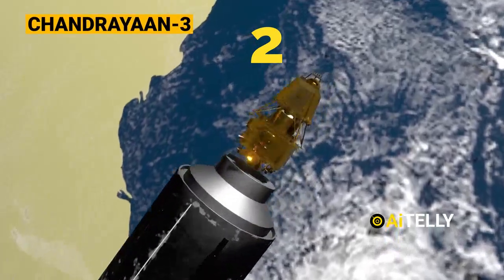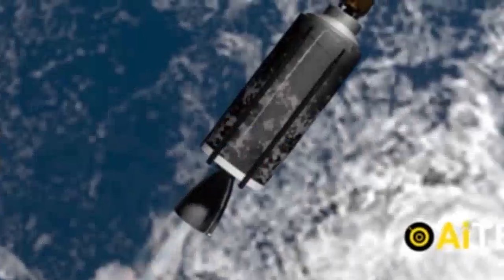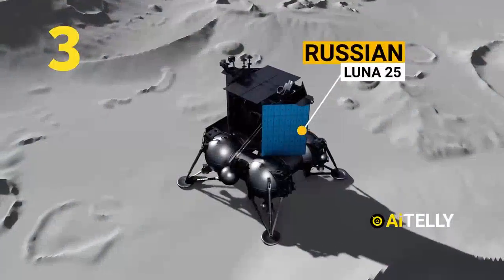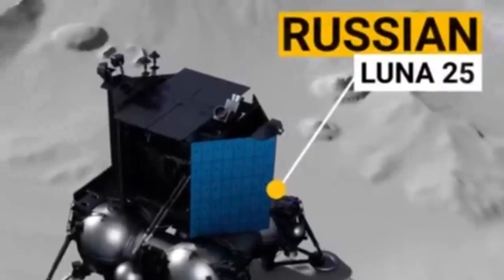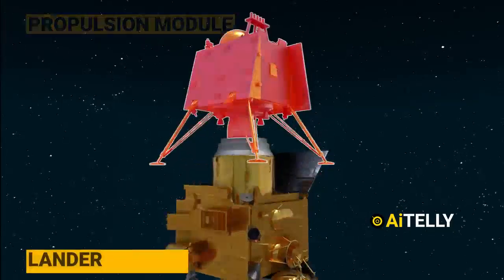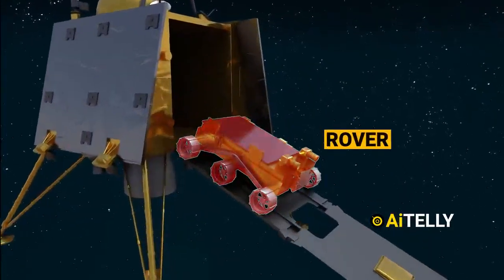Number two, the basic process of how the Chandrayaan-3 works in step-by-step format. Number three, a very short comparison of the Russian Luna-25 lander, why it might last more than one lunar day. All in the videos ahead so don't miss a beat.